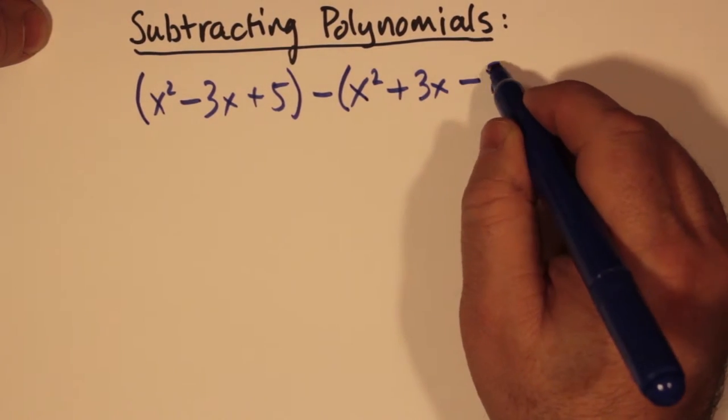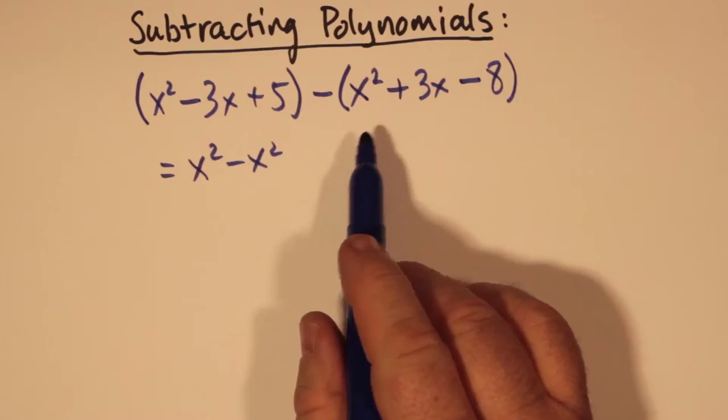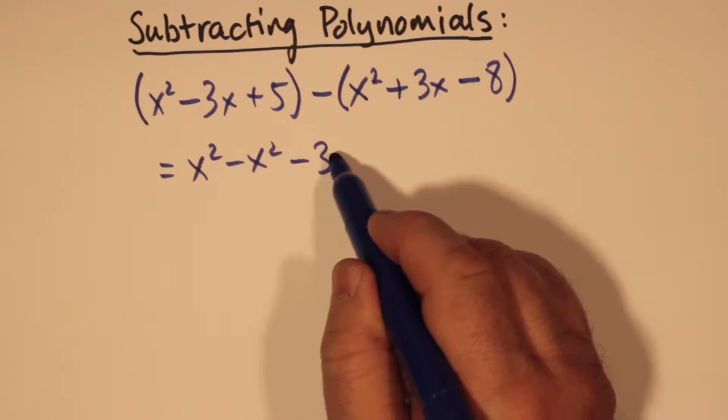Once again, everything in the second bracket has its sign flipped over when we remove the bracket. So what we get really is x squared minus 3x plus 5 minus x squared minus 3x plus 8. The x squared in the second bracket changes to negative x squared. The 3x changes to negative 3x.